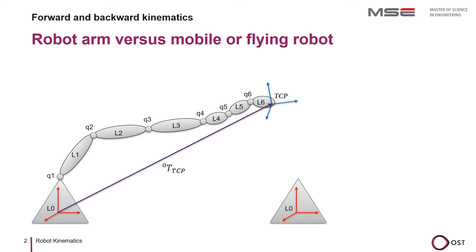For the mobile robot, the base coordinate system L0 is defined somewhere in the working area of the mobile robot, but it is not connected to the robot. It could be in the corner of a factory building or for outdoor applications at a defined location in a country. For example, the defined location of the Swiss base is in the old observatory in Bern. However, the coordinates are not 0,0 but 2.6 million meters by 1.2 million meters, which means that the Swiss base coordinate system is not actually in Switzerland.